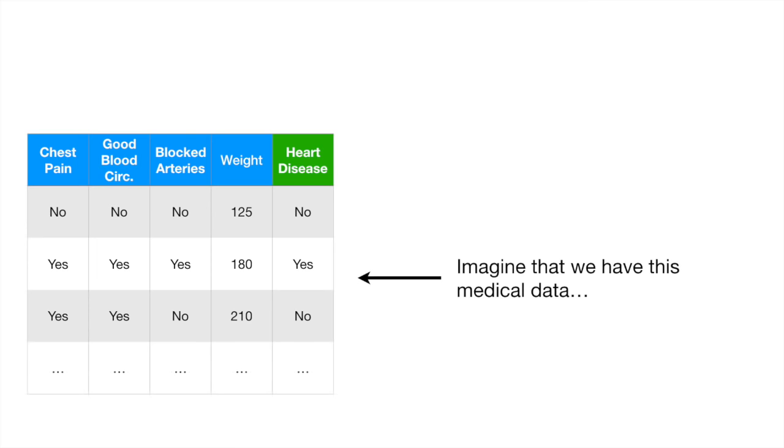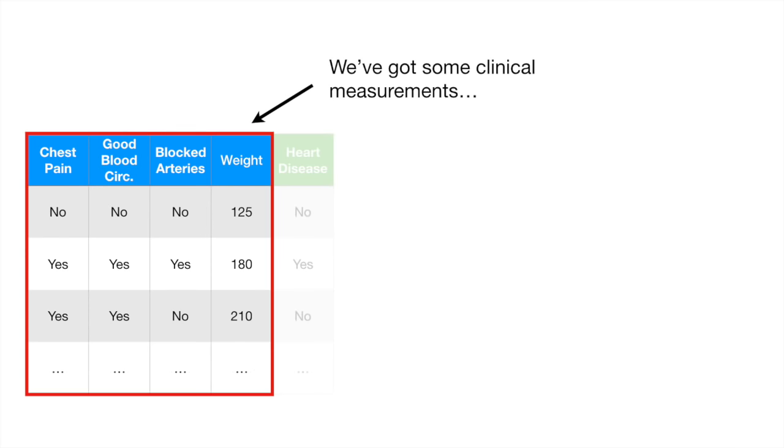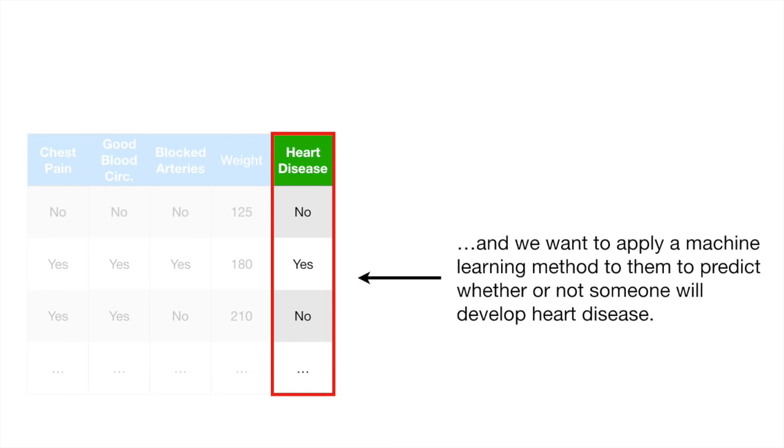Imagine that we have this medical data. We've got some clinical measurements, like chest pain, good blood circulation, blocked arteries, and weight, and we want to apply a machine learning method to them to predict whether or not someone will develop heart disease.